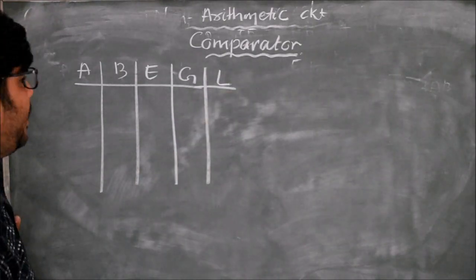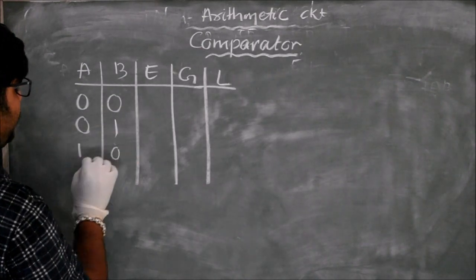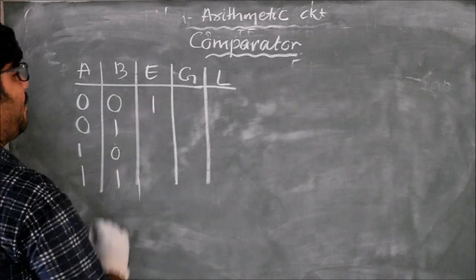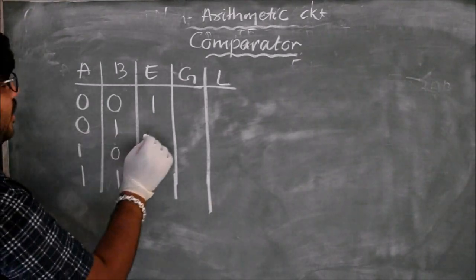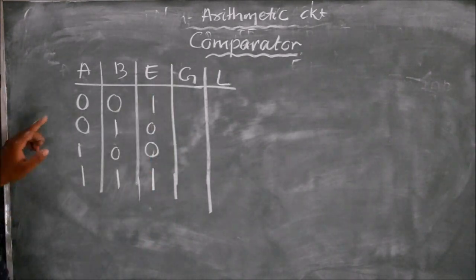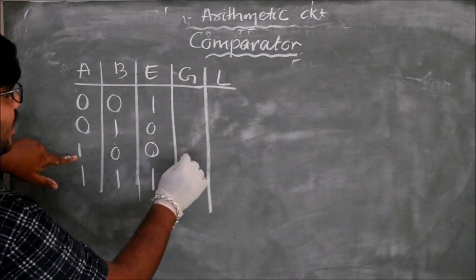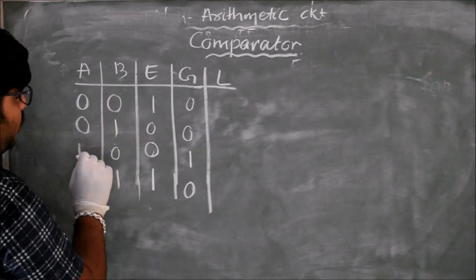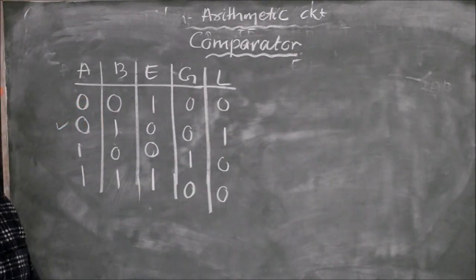For two bits I can have four different combinations: 0-0, 0-1, 1-0, and 1-1. For the equal column: 0-0 is equal so I write one, 1-1 is equal so I write one, and the others are not equal so I write zero — giving 1,0,0,1. For greater, A is greater than B only in the 1-0 case, so I write one there and zero elsewhere. For less than, A is less than B only in 0-1, so I write one there and zero elsewhere.